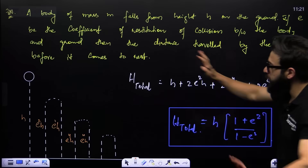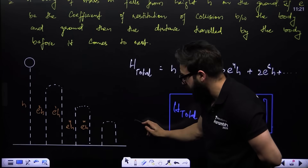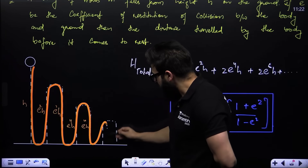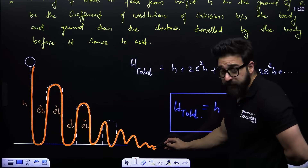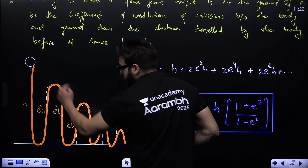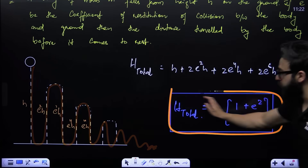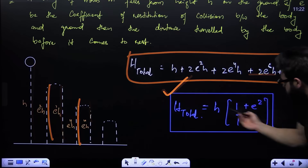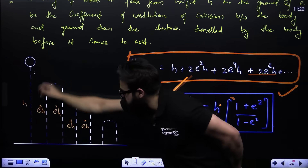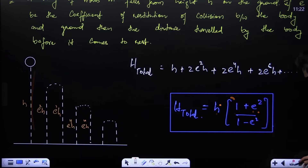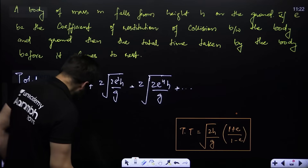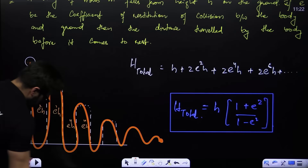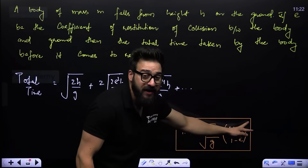One more important thing: if an object is released from height h, bounces repeatedly and eventually comes to rest, the total distance covered before coming to rest is: h × (1 + e²)/(1 − e²), where e is the coefficient of restitution. Similarly, the total time taken before it comes to rest is: √(2h/g) × (1 + e)/(1 − e).